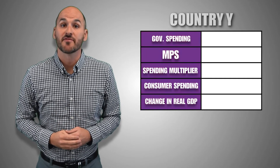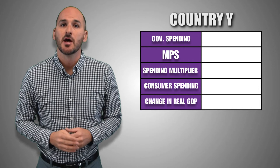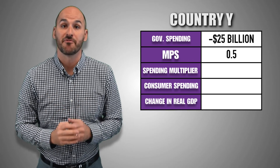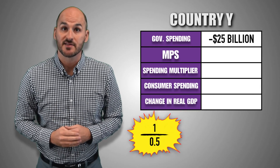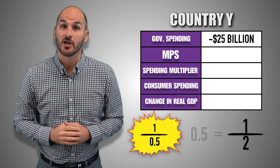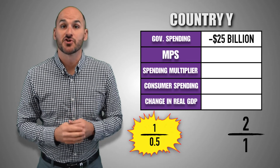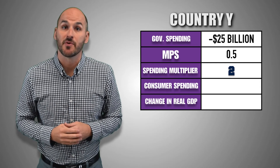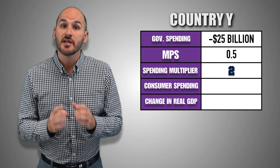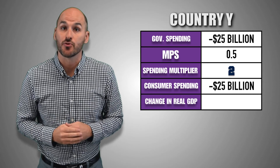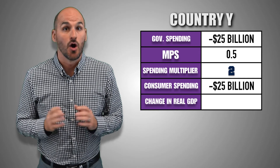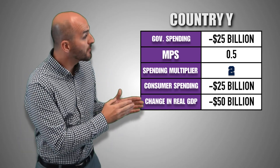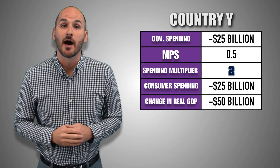Now suppose the government of Country Y decreases spending on public goods by $25 billion, and the MPS in Country Y is 0.5. The spending multiplier is 2. After the contractionary fiscal policy is implemented, consumers lose the disposable income that would have been generated by government expenditures, leading to a $25 billion decrease in consumer spending through the multiplier effect. Ultimately, a $25 billion decrease in government spending leads to a $50 billion decrease in real GDP output in Country Y.